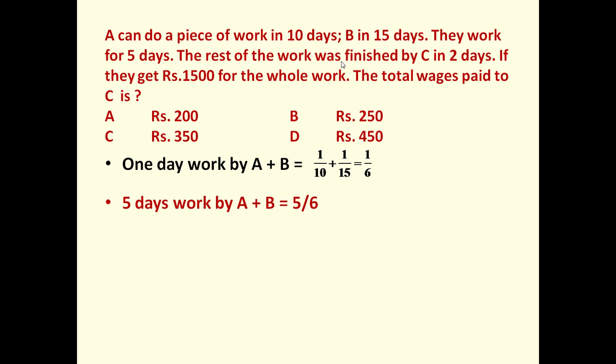Now the rest of the work was finished by C. So total work done by C is equal to 1 minus 5 by 6, which equals 1 by 6.